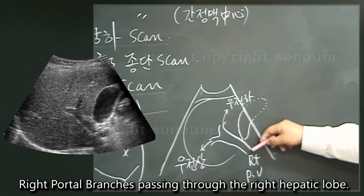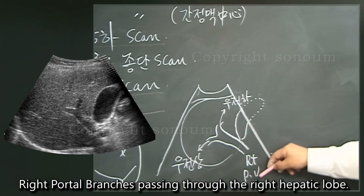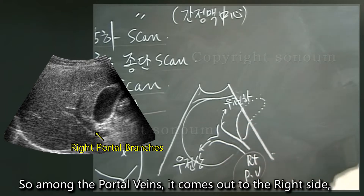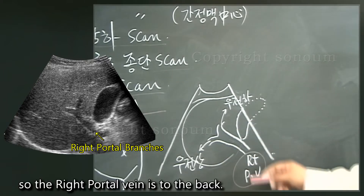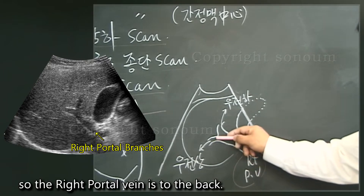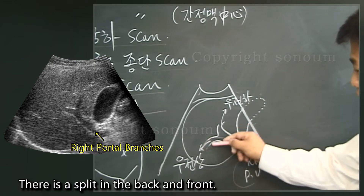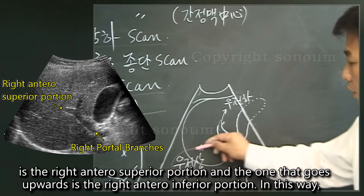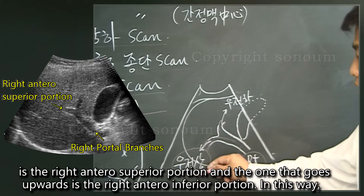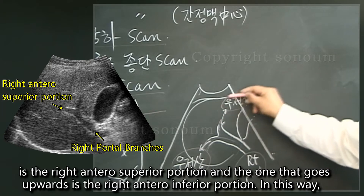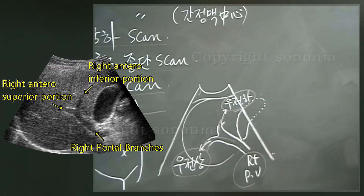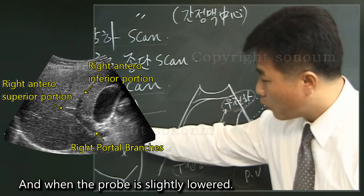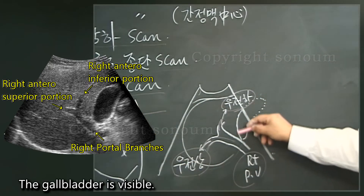The right portal branches pass through the right hepatic lobe. The right portal vein goes to the back, where it splits into anterior and posterior divisions. The branch falling backwards is the right antero-superior portion, and the one going upwards is the right antero-inferior portion. In this way, anatomical zones can be divided. When the probe is slightly lowered, the gallbladder becomes visible.